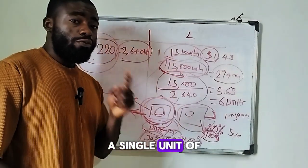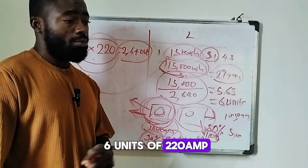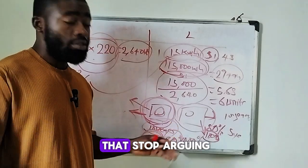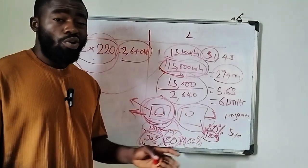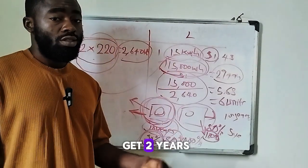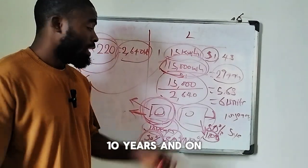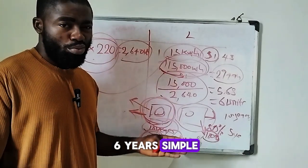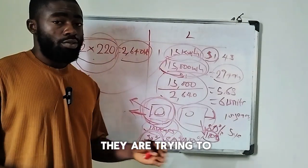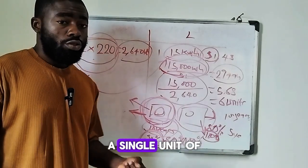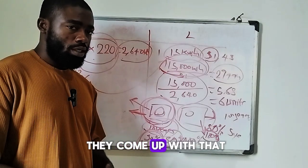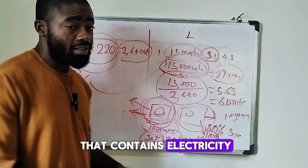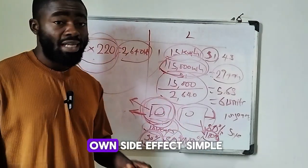The issue is that the tubular battery manufacturer tells you not to use 80% or 100% if you want your battery to last 10 years. If you use 80%, your tubular battery may only last five years. So a single 15 kilowatt-hour lithium battery equals six units of 220Ah tubular battery — stop arguing. On tubular at 100% DoD you get about 2-3 years; at 50% you get 7-10 years. On lithium at 90-100% DoD you get about 4-6 years. Your battery bank is just a container — it can deliver 100% of what it stores, but there are side effects.